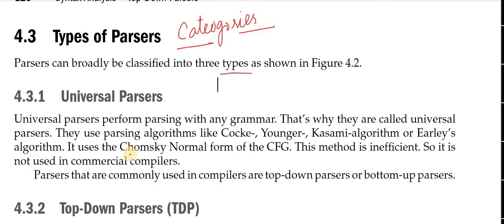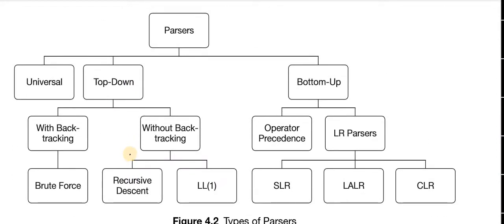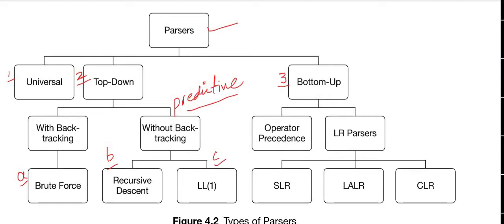In the figure, it is shown that parsers have three categories: Universal Parsers, Top-Down Parsers, and Bottom-Up Parsers. Top-Down Parsers are further divided into with-backtracking (Brute Force Parser) and without-backtracking (Predictive Parsers). Predictive Parsers further have two sub-types. Bottom-Up Parsers have two types — one is operator precedence, and the other has three further sub-types.